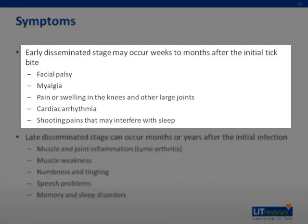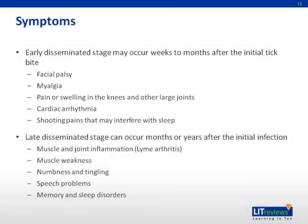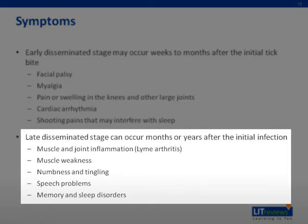An early disseminated stage of disease can occur weeks to months after the initial tick bite, and can present as facial palsy, myalgia, pain or swelling in the knees and other large joints, cardiac arrhythmia, and shooting pains that may interfere with sleep. In the late disseminated stage of Lyme disease, which can occur months or years after the initial infection, patients can present with muscle and joint inflammation or Lyme arthritis, muscle weakness, numbness and tingling, speech problems, and memory and sleep disorders.